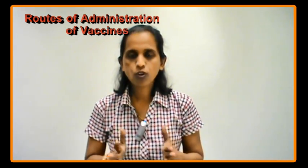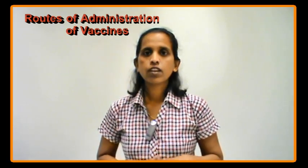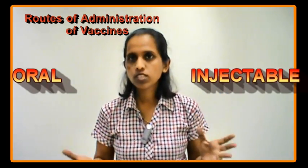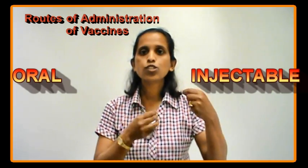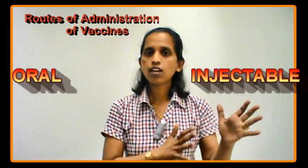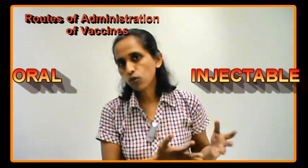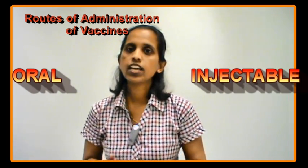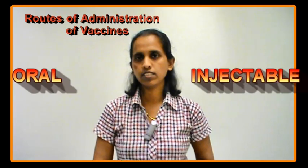Let's look at what are the different routes of administration. The basic division is between oral and injectable. Vaccines administered into the mouth without the help of a needle or syringe are known as oral vaccines, whereas vaccines administered with the help of a syringe and needle are known as injectable vaccines.